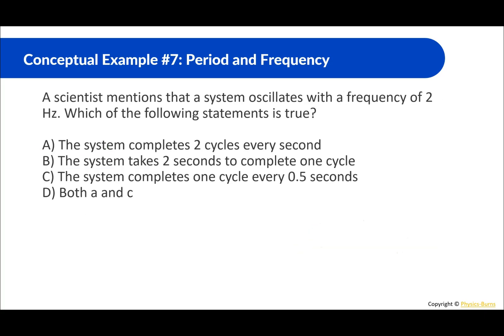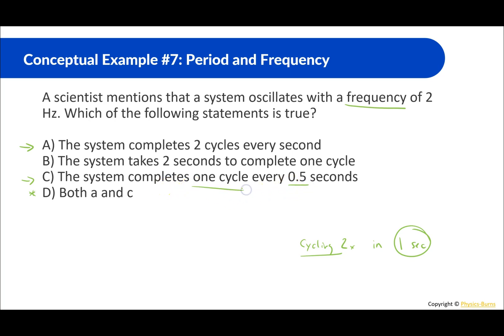A scientist mentions that a system oscillates with a frequency of 2 hertz. Which statement is true? A: the system completes two cycles every second. B: the system takes two seconds to complete one cycle. C: the system completes one cycle every 0.5 seconds. D: both A and C. Frequency means how many times something cycles in one second, so the system cycles two times per second — that's A. But if every half second it completes one cycle, then in one second it completes two cycles — that's also correct. So the answer is both A and C.